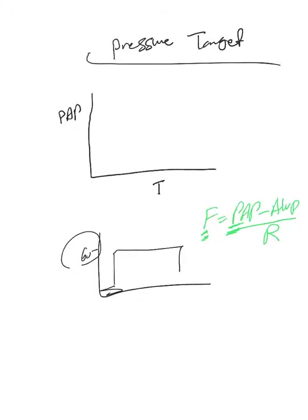So basically, here we tell the ventilator we want you to achieve this pressure target - let's say 20 centimeters H2O - and keep it through the inspiratory cycle. Then when you terminate, the cycle goes back.